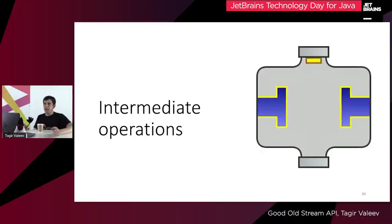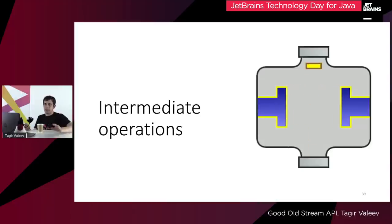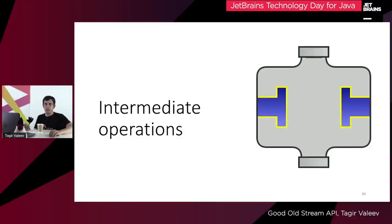There are more ways to create sources. For example, you can create one with an iterator, but it won't parallelize nicely. In any case, creating new sources is quite simple. Even without third-party libraries, you can create many sources in your code and use them conveniently. Unfortunately, it's not so easy with intermediate operations.